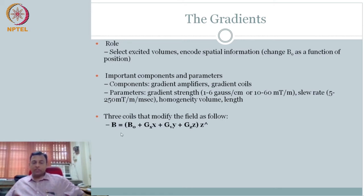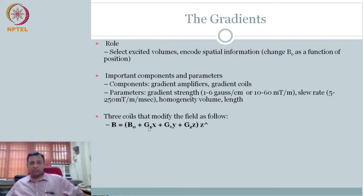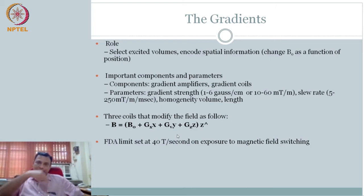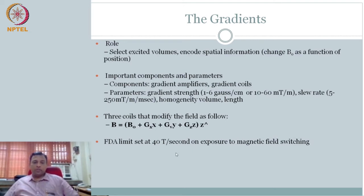Your B is always in the Z direction — we are always interested in the Z direction, but it is slightly changed based on gradient properties. GX, GY, GZ are the gradient strengths. This is your B in the Z direction. Now the Z direction means the patient is lying, always head to foot direction. Of course, there are limits for switching. You cannot change too rapidly because of the human body — you do not want unknown effects from switching so rapidly. So there are some limits.